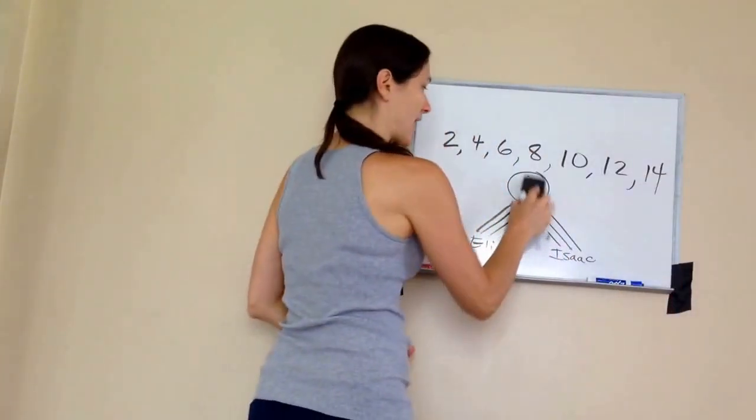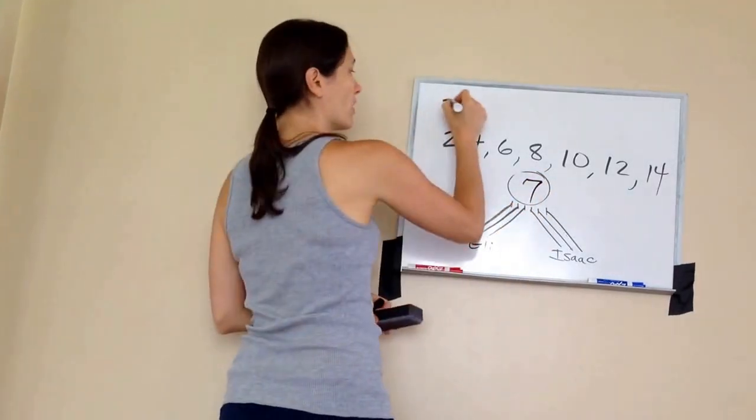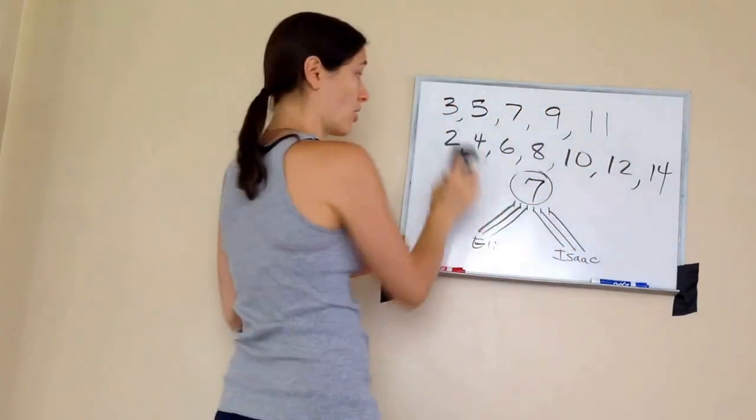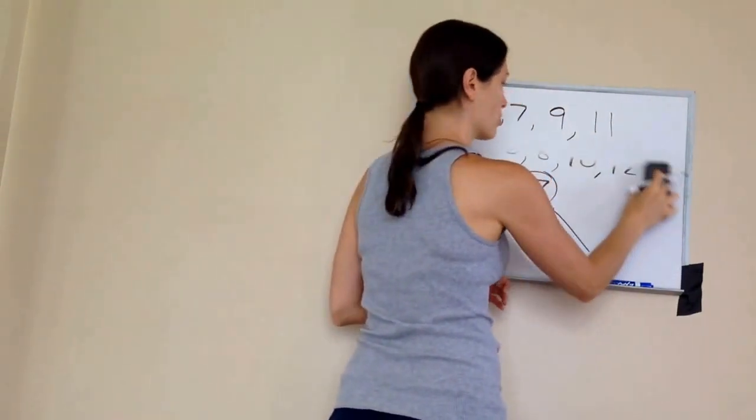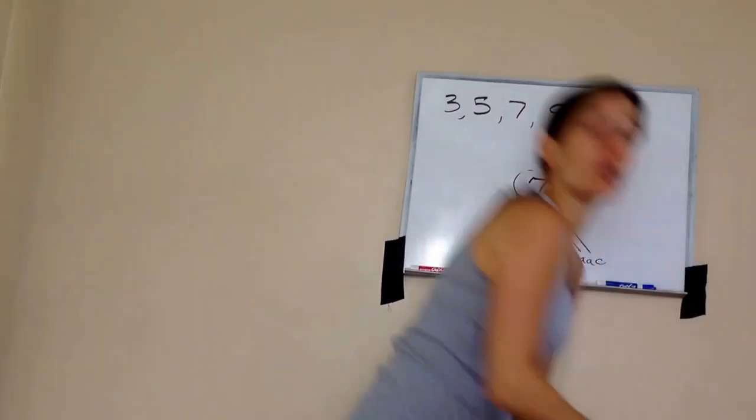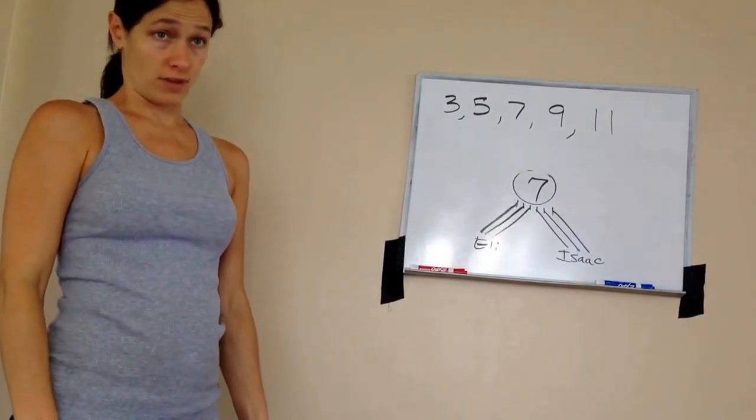But let's say I had seven. Now, you know that three, five, seven, nine, eleven, and it keeps going, are all what kind of numbers? Odd. Odd numbers. And odd numbers mean that they do not distribute evenly.